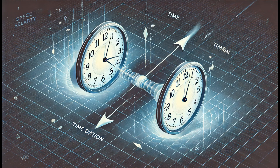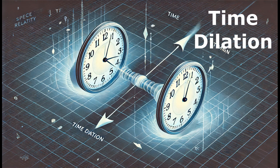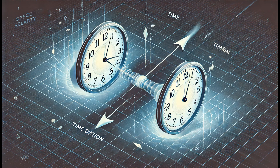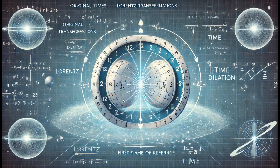Finally, we will touch on the concept of time dilation. This is a fundamental aspect of special relativity and highlights how time can pass differently between two observers in relative motion. Let's consider two events that occur at the same location in the second reference frame, at two different times. We want to understand how these events are perceived in the first frame of reference, which is moving relative to the second.